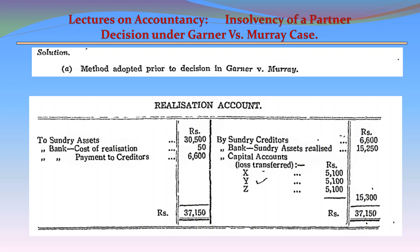On the debit side: to sundry assets 30,500; to bank (cost of realization) 50; to payments to creditors 6,600. On the credit side: by sundry creditors 6,600; by bank (sundry assets realized) 15,250; by capital accounts — losses transferred equally — X: 5,100; Y: 5,100; Z: 5,100. The losses are distributed equally because there is no mention of the profit-sharing ratio in the problem, so they are borne equally among the partners.